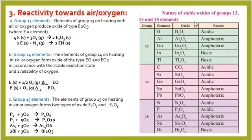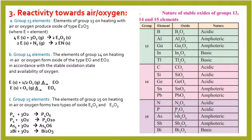Looking at this table, the nature of oxides of group 13: boron forms boron oxide which is acidic in nature, aluminium and gallium oxides are amphoteric, and indium and thallium oxides are basic. For group 14: carbon dioxide, silica and germanium oxide are acidic, while stannic oxide and lead oxide are amphoteric. For group 15: nitrogen and phosphorus form acidic oxides, arsenic and antimony oxides are amphoteric, and bismuth oxide is basic.